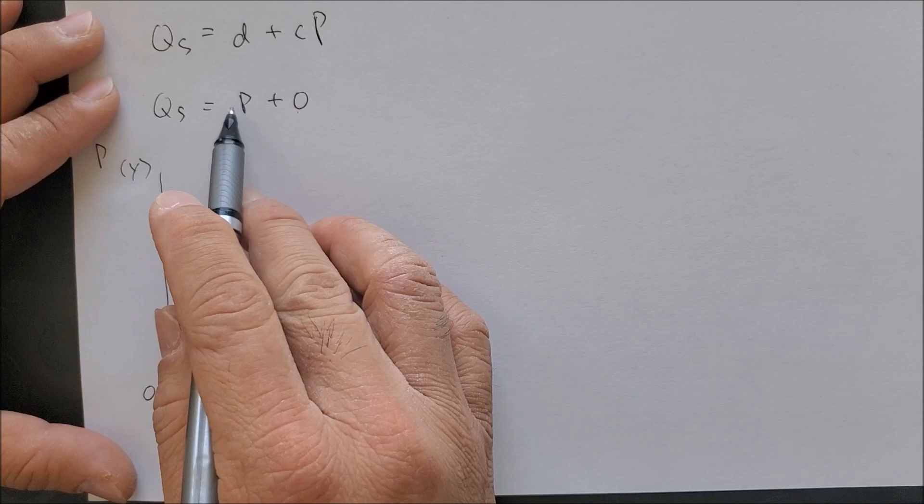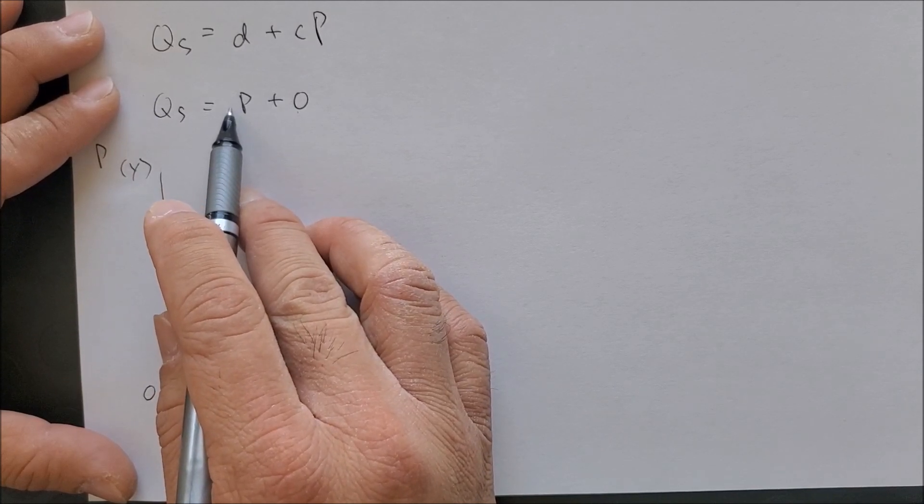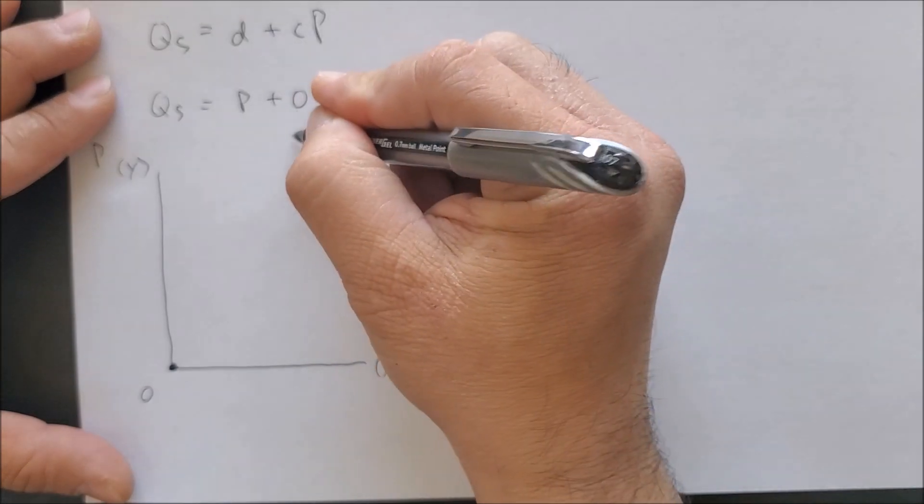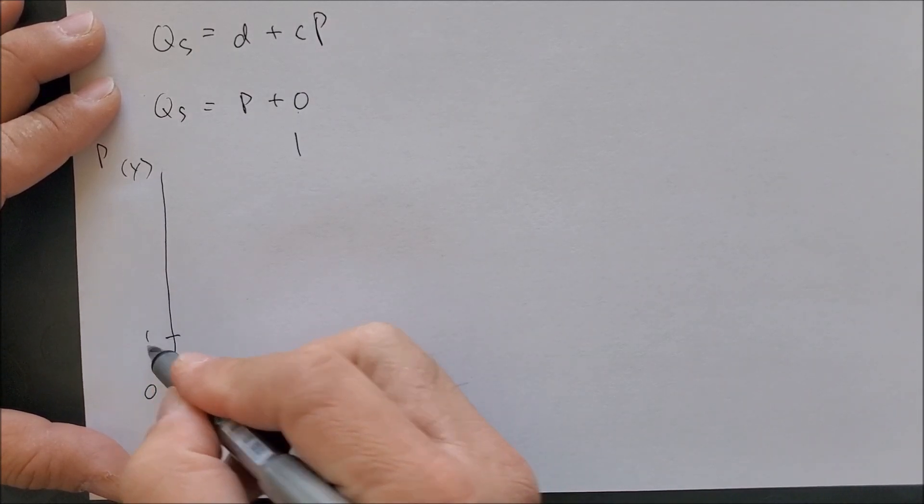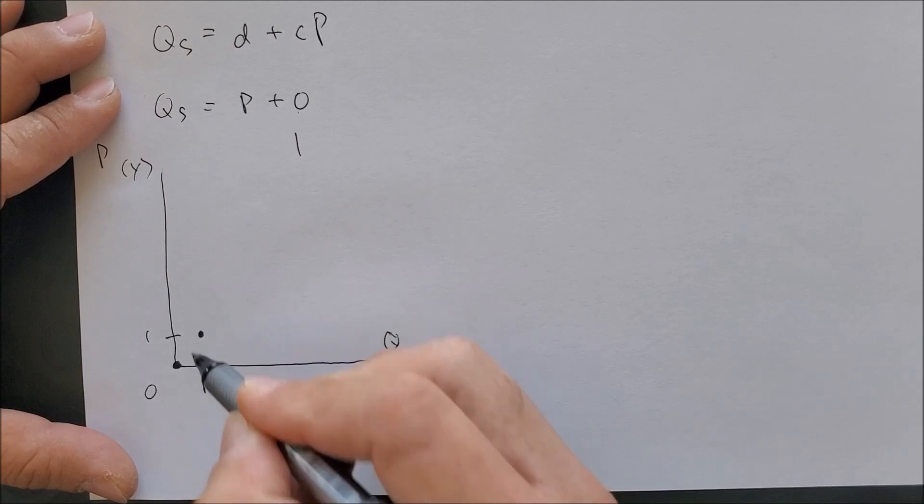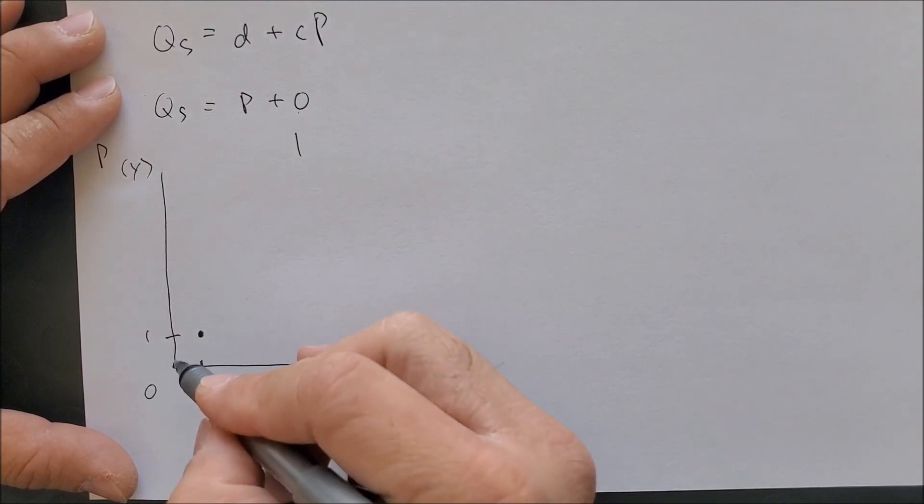Here we can see the slope, the inverse slope of P, which would be run over rise as one. We're going to run to the right, it's positive, and then rise by one to get the inverse slope. Once we have these two dots, we can connect them.